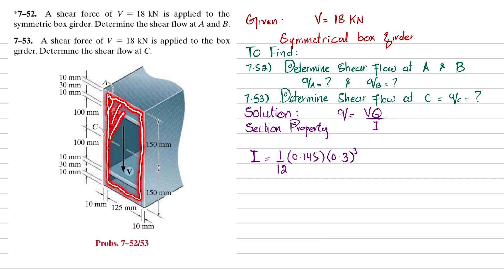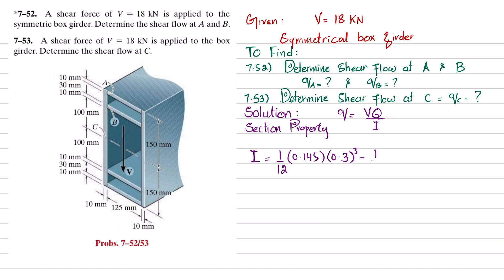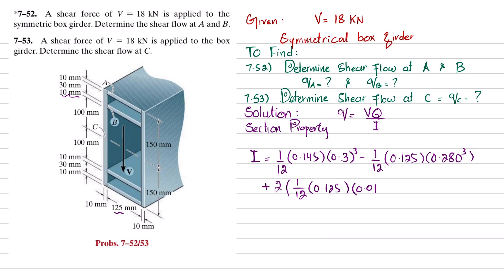Then we subtract the hollow portion from the solid girder. The inner width is 125 mm and the inner height is 300 − 20 = 280 mm. So we subtract (1/12)(0.125)(0.280)³. Then we add the moment of inertia of the two horizontal flange plates: plus 2 × (1/12)(0.125)(0.01)³, where the plate breadth is 125 mm and thickness is 10 mm.